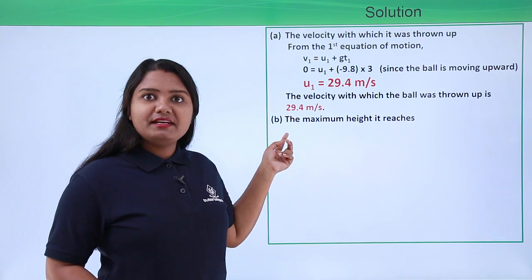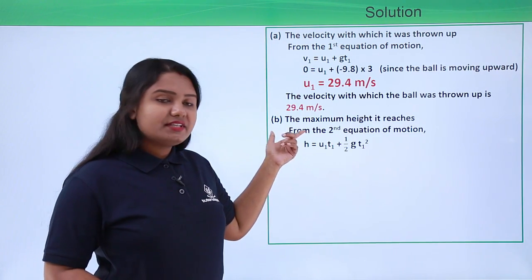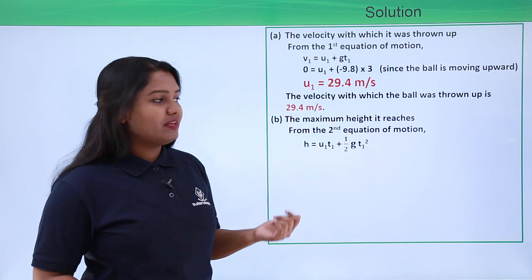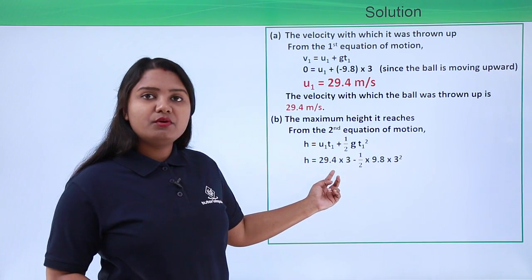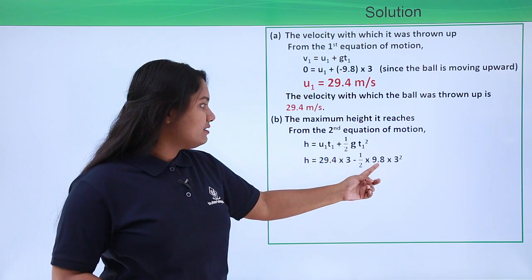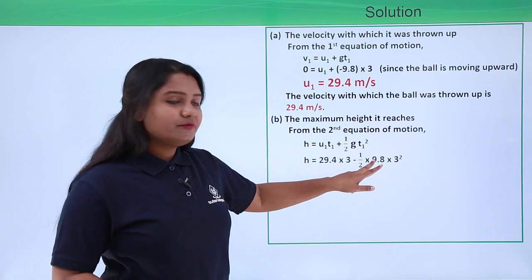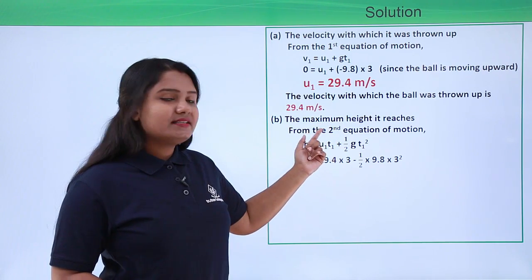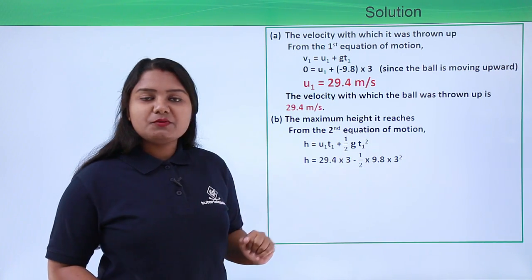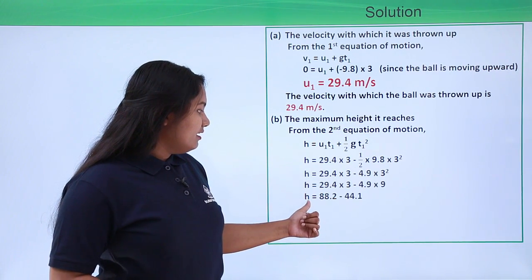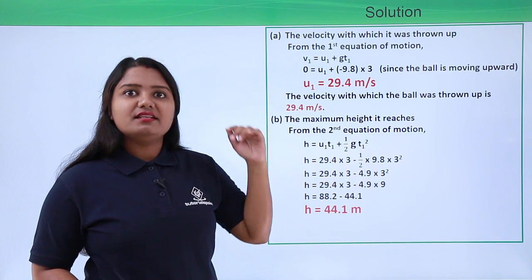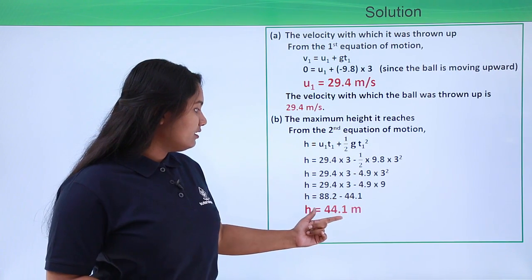The second thing to find is the maximum height. Using the second equation of motion: h equals u1·t1 plus half·g·t1 squared. Substituting u1 equals 29.4 m/s, t1 equals 3 s, and g equals −9.8 m/s² (negative because the ball moves upward), this gives h equals 44.1 meters. So the maximum height the ball reaches is 44.1 meters.